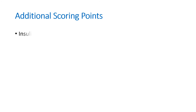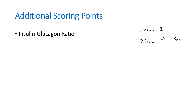For additional scoring points, consider the insulin-glucagon ratio. Since glucagon is the exact opposite of insulin — insulin stores and decreases blood glucose while glucagon increases blood glucose — during starvation we want glucagon levels to rise to release more glucose into the blood, whereas in the fed state we want insulin levels to go up. There should be a fine balance between insulin and glucagon to keep blood glucose levels normal. That is the importance of the insulin-glucagon ratio.